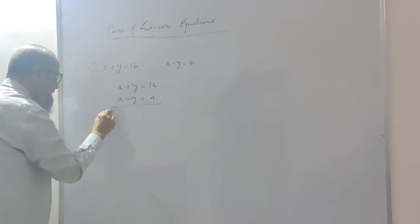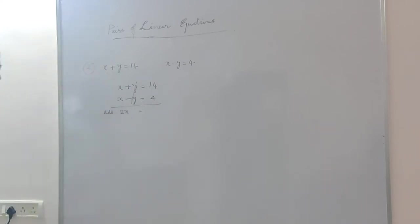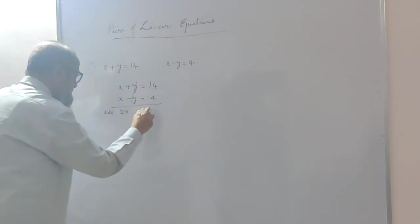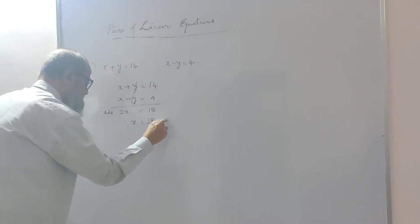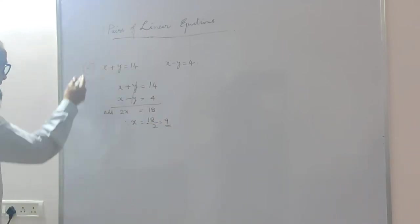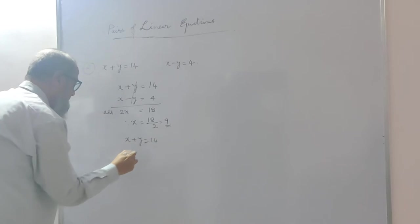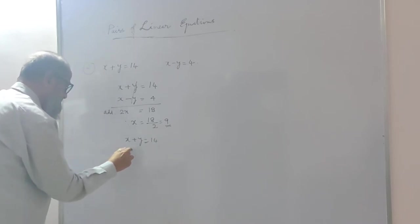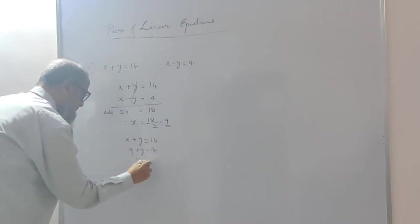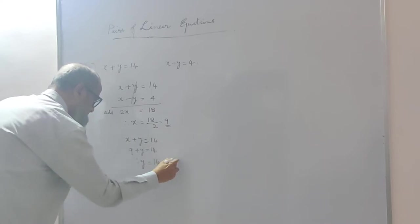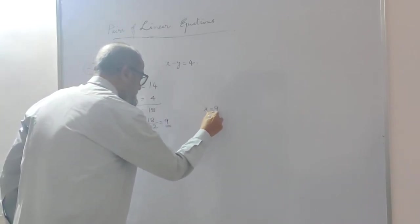Adding the two equations: y gets eliminated because one is plus y and the other is minus y. 2x equals 14 plus 4, that is 18. Therefore x will be equal to 18 by 2, that is 9. The value of x is 9. Then substituting in x plus y is equal to 14: 9 plus y equals 14, so y will be equal to 14 minus 9, that is 5. So x is 9 and y is 5.